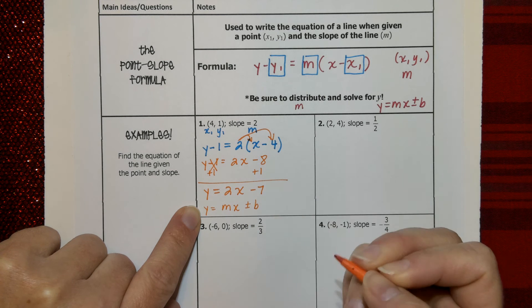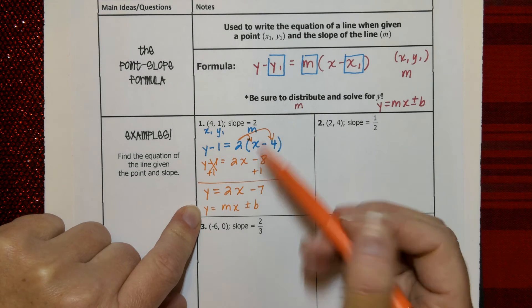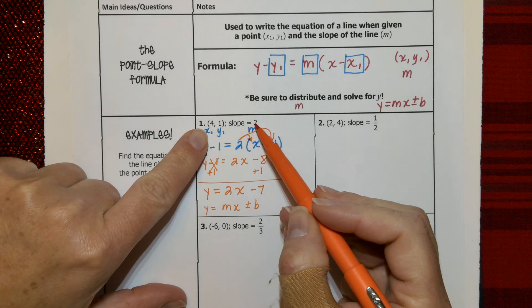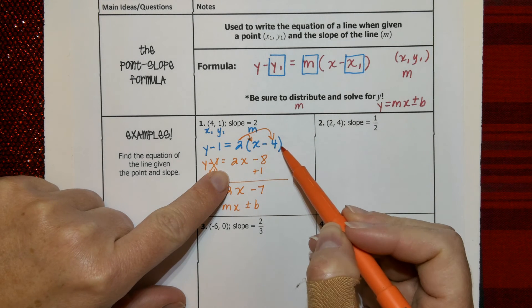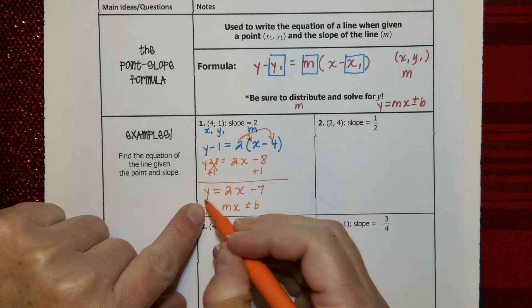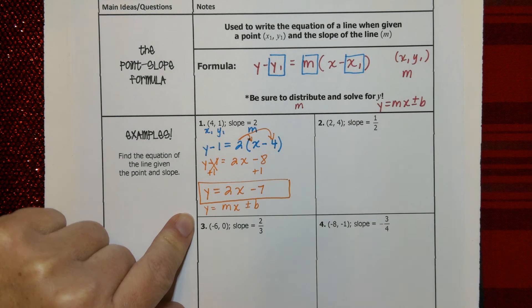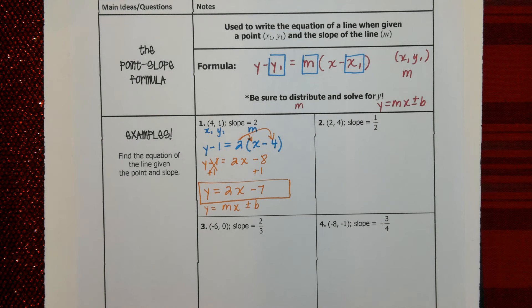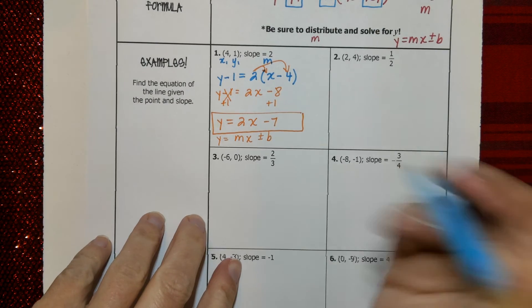And now we have Y equals 2X minus 7. Y equals MX minus B. In this case, it's a minus B. So do you see that? Look at that. Let's go back. We took our point. We took our slope. We substituted those values into the point-slope formula. We did the distributive property. And then we isolated or solved for Y. And now what we have is slope-intercept form. And that's the goal. Pretty cool, huh? I mean, you know, in a nerdy algebra kind of way.